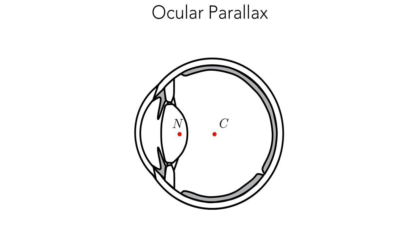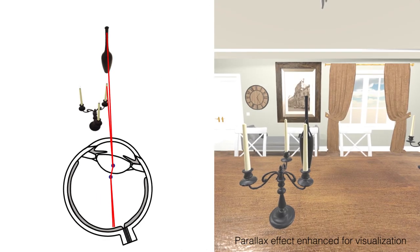Even though the distance from this point to the center of rotation is only a few millimeters, changes in gaze direction create small amounts of depth-dependent image shifts on the retina, as illustrated here.